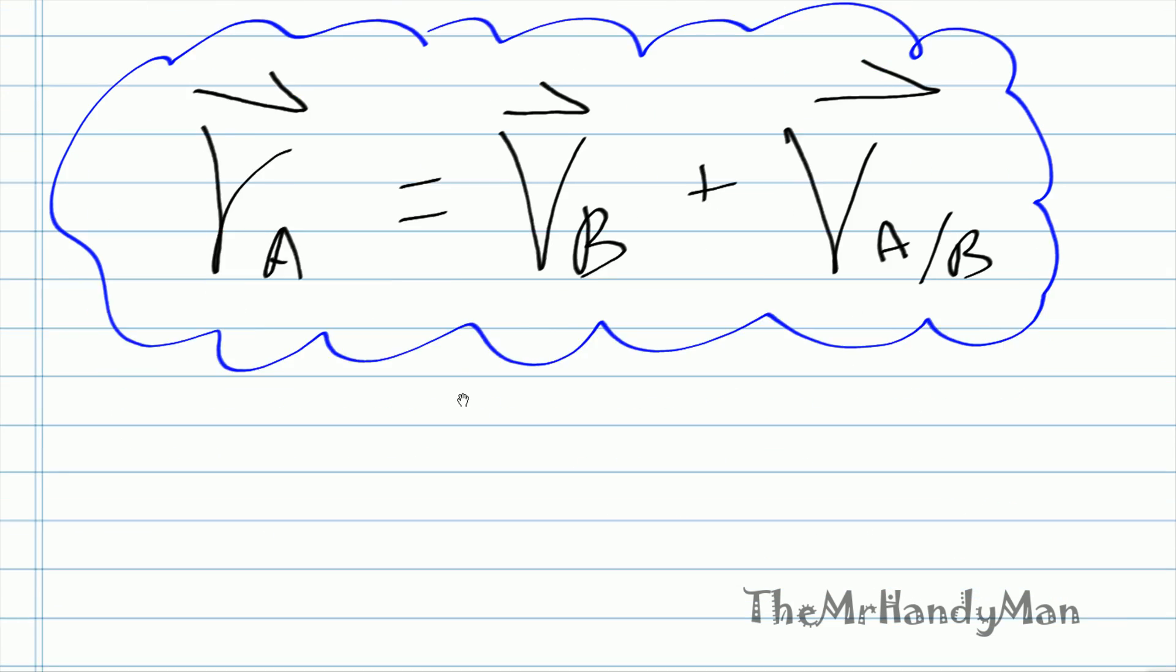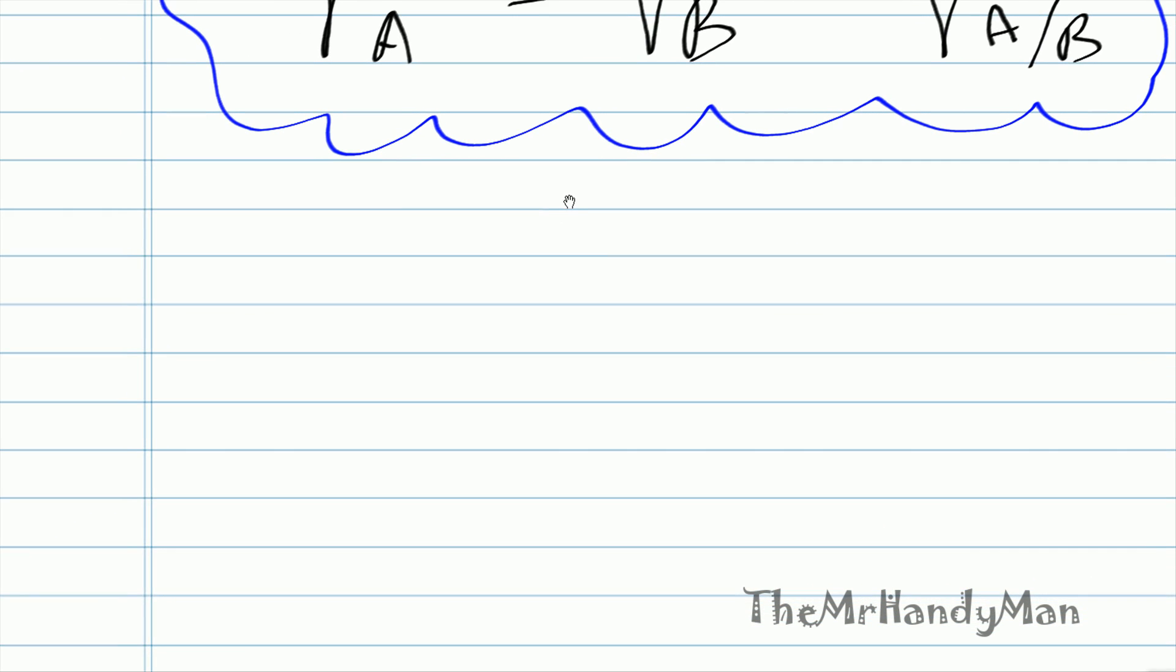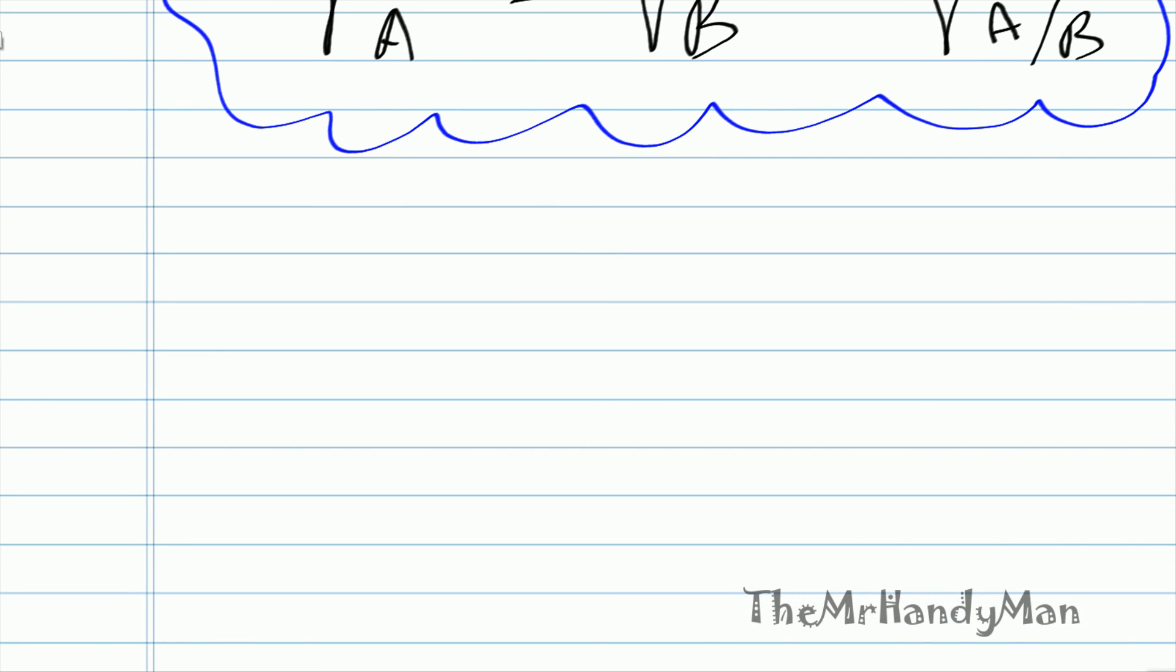And what does that look like graphically? That's one of the key things that we need to understand. First of all, you may have V A, which I'm going to put in green here. So V A. And then you would have V B, which is just arbitrary direction.